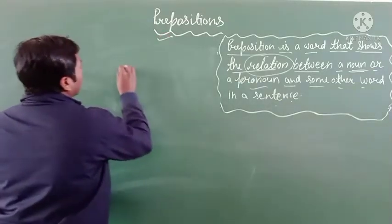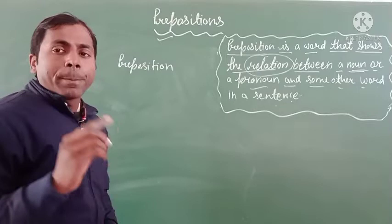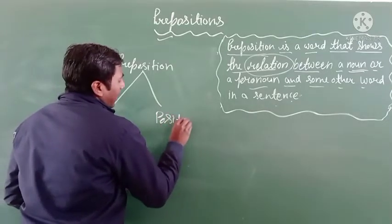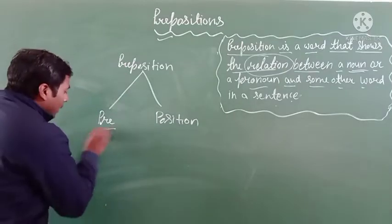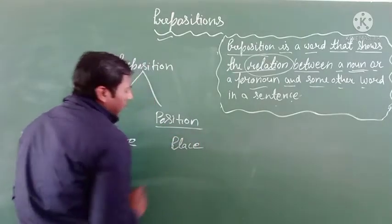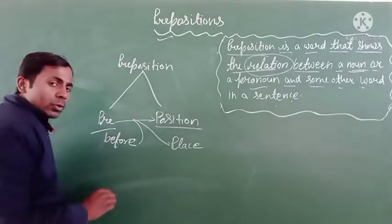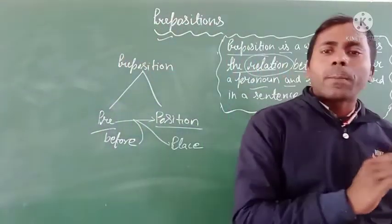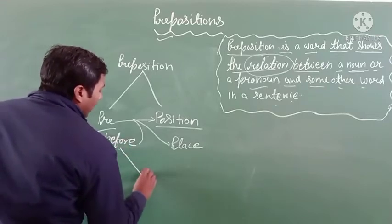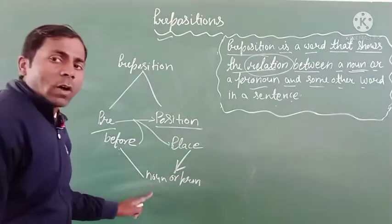First, what is a preposition? This word is made of two words: pre and position. Pre means before, and position means place. It means this preposition word is used before the noun or pronoun. It is a word that is used before a noun or pronoun, and its place is before the noun.